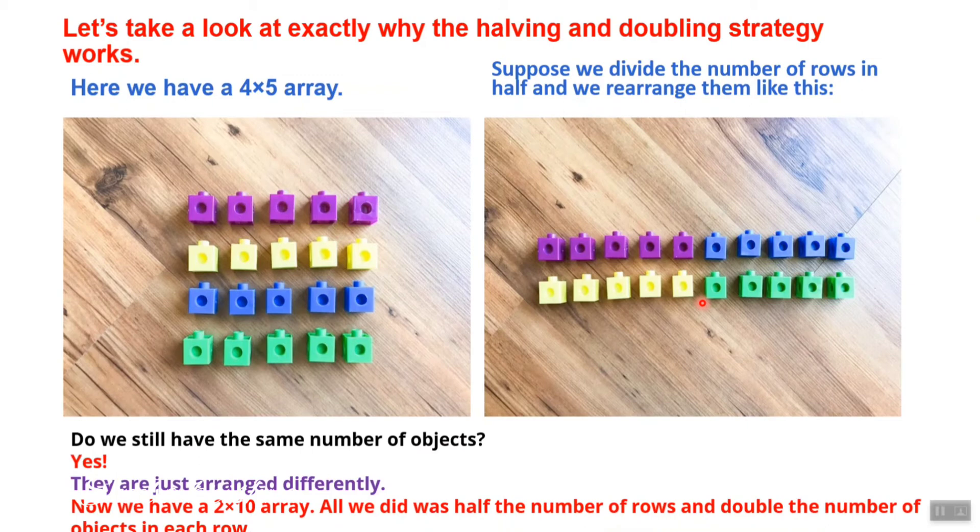Now we have a 2 times 10 array. All we did was halve the number of rows and double the number of objects in each row. There were 4 rows, and we took half to get 2 rows. We had 5 blocks per row, and we doubled it to get 10. So instead of 4 times 5, we have 2 times 10.